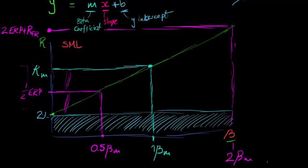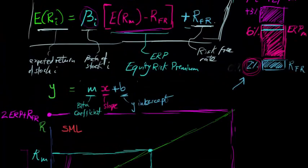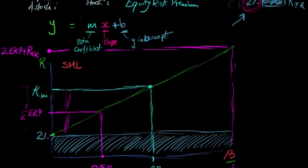If the market return is a risk premium of 6 plus a risk free of 2, then the total is 8. 2 times the equity risk premium would be 12 plus 2 is 14. The market return would be a total of 8%. And half the equity risk premium, half of 6 is 3 plus 2, this would be 5% return.